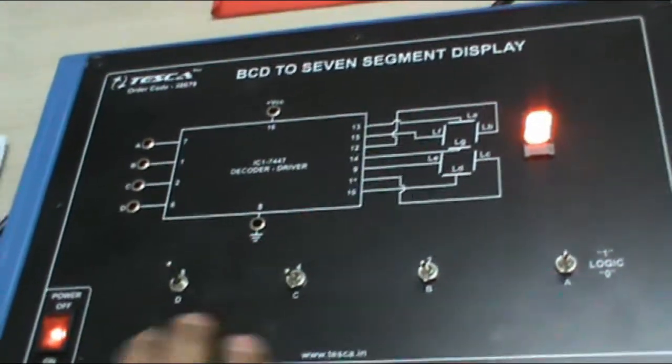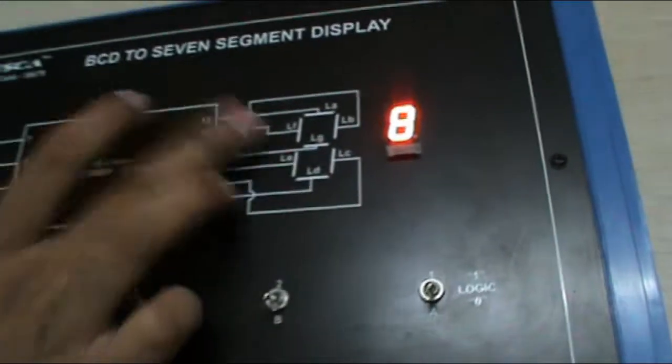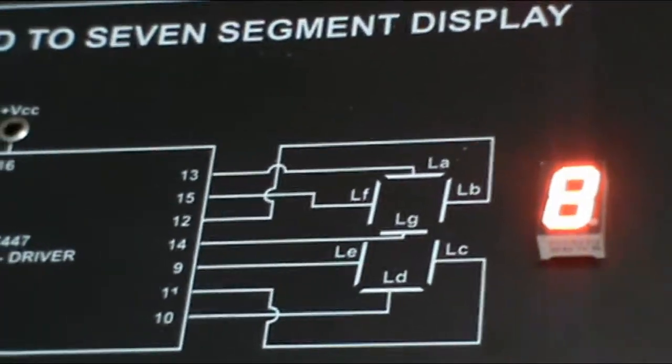In order to display 8, I will give input D as 1. And all display segments A, B, C, D, E, F, G are given as 1 logic, so that it shows 8 on the 7 segment display.